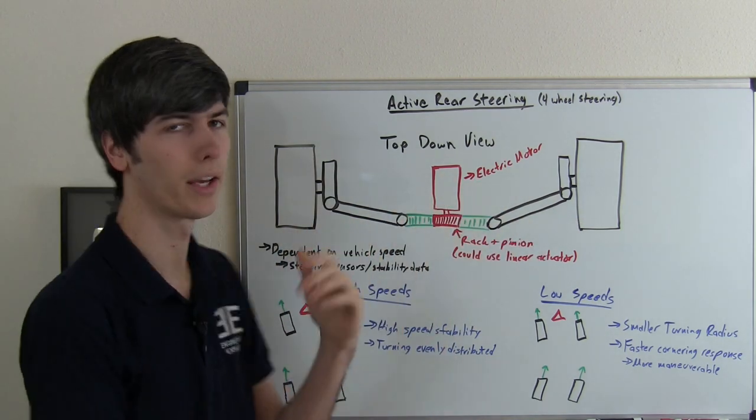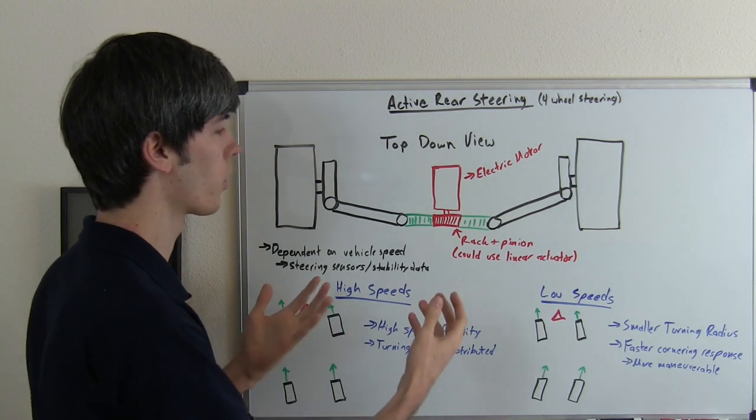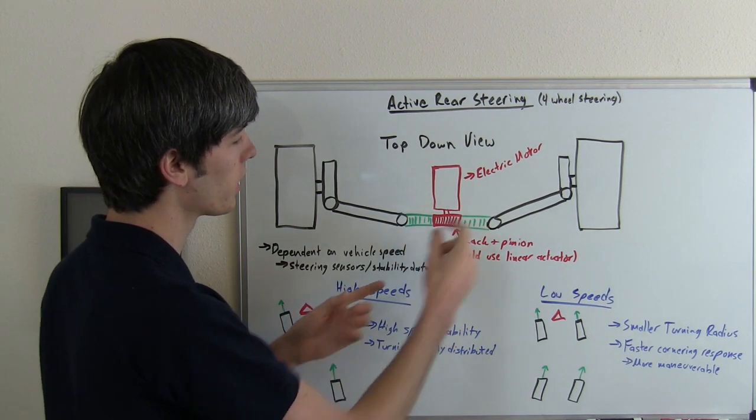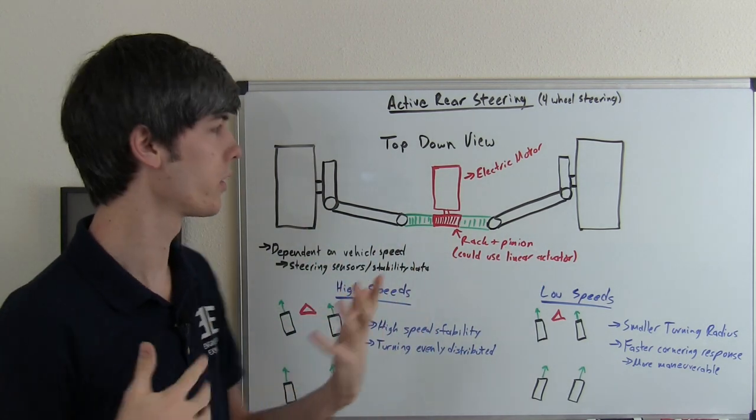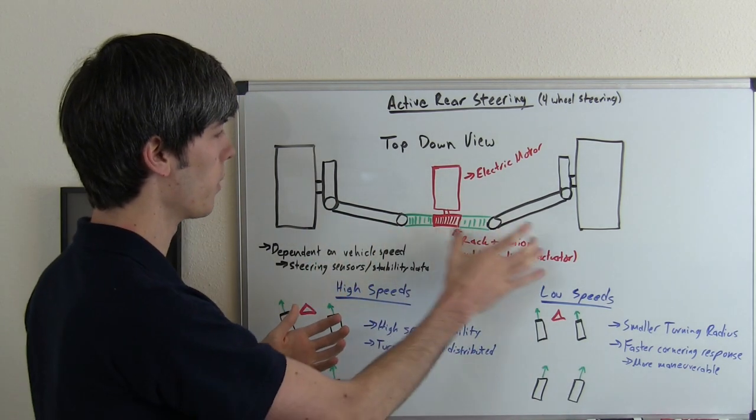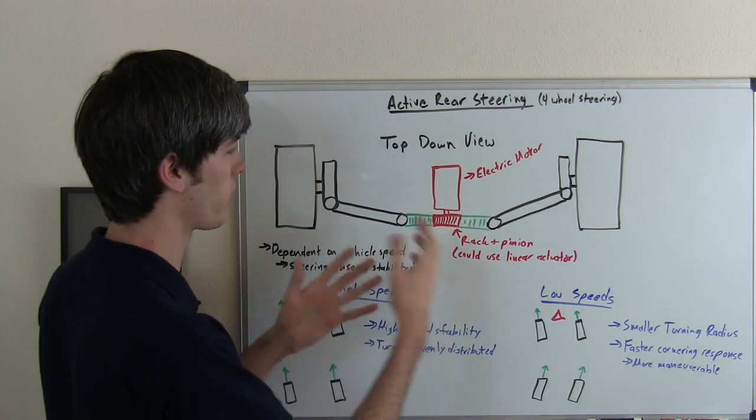Now there are multiple ways you could do this. You could have a hydraulic setup, or you could have the electric motor in line and use a linear actuator to create that back and forth movement. There are all kinds of different ways to create motion in that direction. I just chose this method as it's simple to understand.